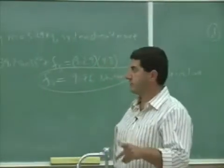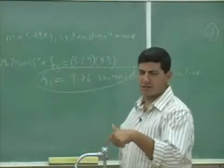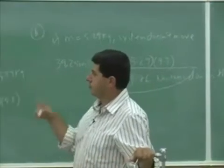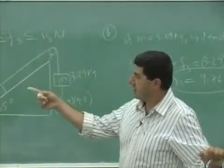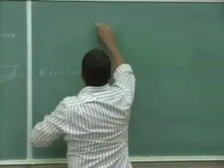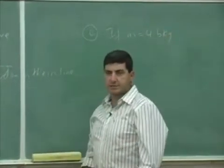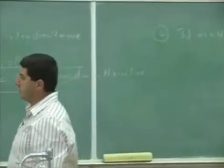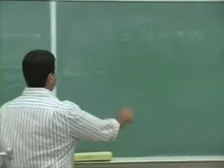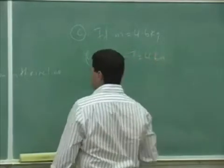Part C asked: what is the acceleration of the system if you put one kilogram more than the required mass to make it move? So if I put 4.6 kilograms — M equals 4.6 kilograms — the system will accelerate. The equation for this block is: 4.6 times 9.8 minus T equals 4.6a. It's going to accelerate down.